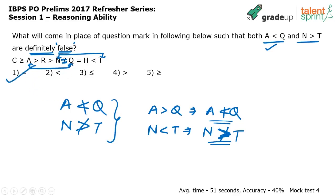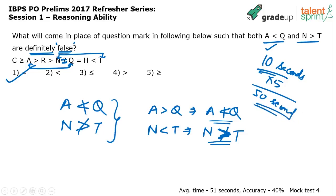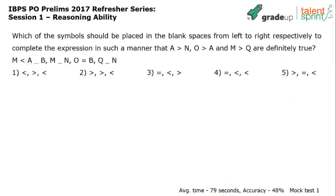So option one is the answer. How much time should it take? About 10 seconds, or up to 60 seconds if option 5 were correct and we had to go through all options — but here option one is correct. Yet the average time spent is 51 seconds, and the accuracy rate is only 40%. One major reason is the word 'false' — many of you did not read the question properly. You have to be fast in the exam, but you cannot read 'false' as 'true.' Option one is the correct answer.